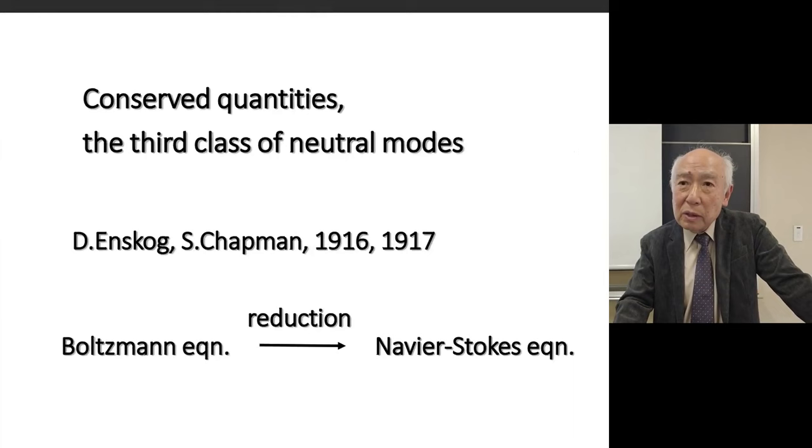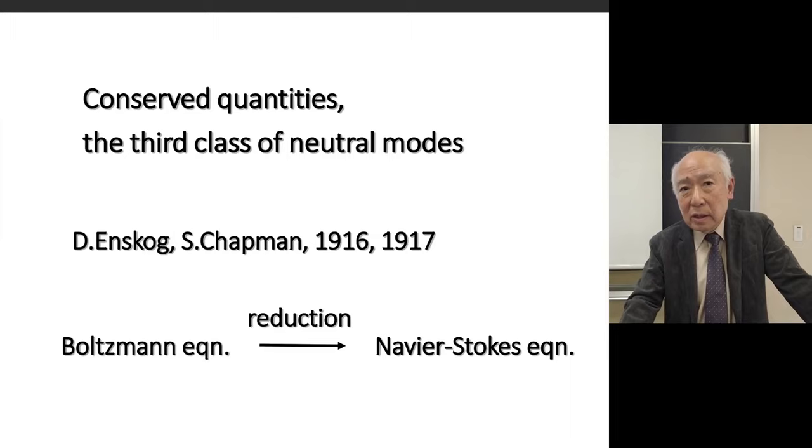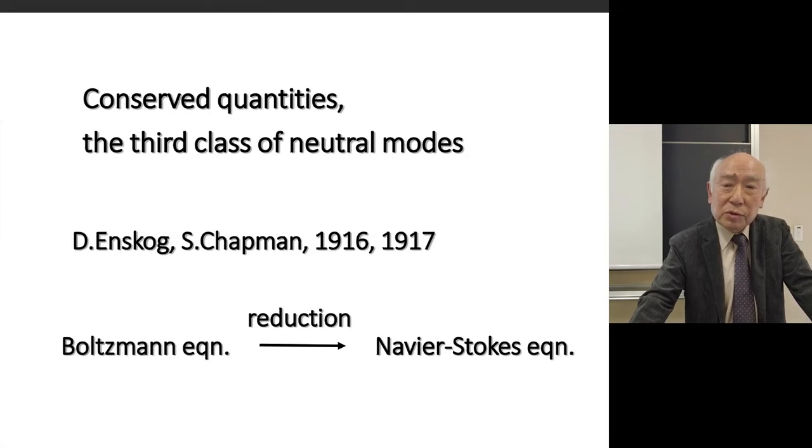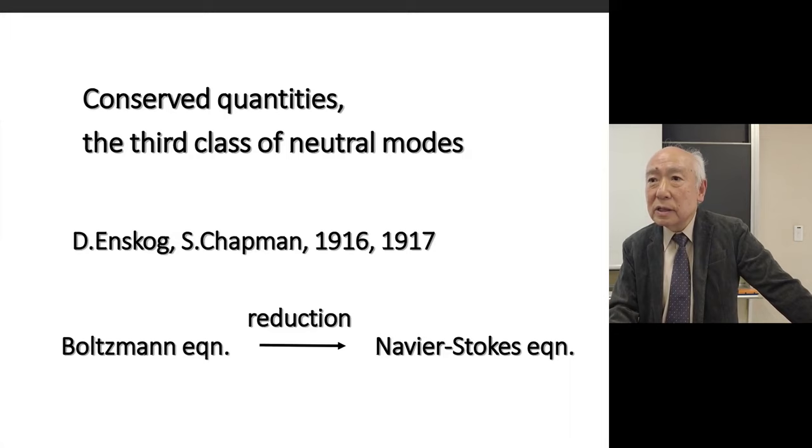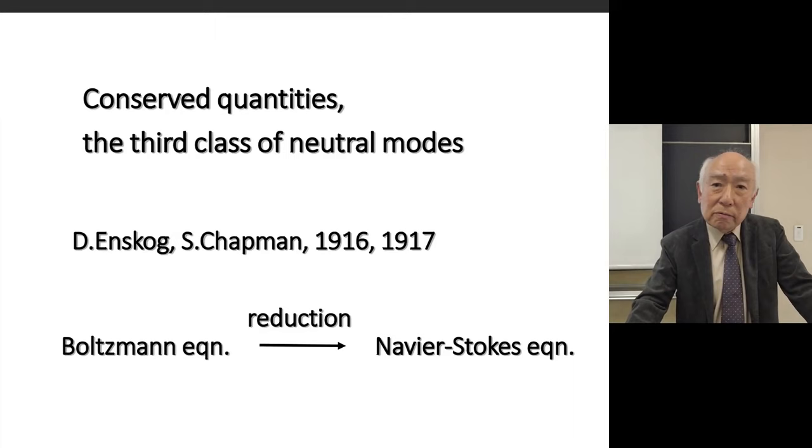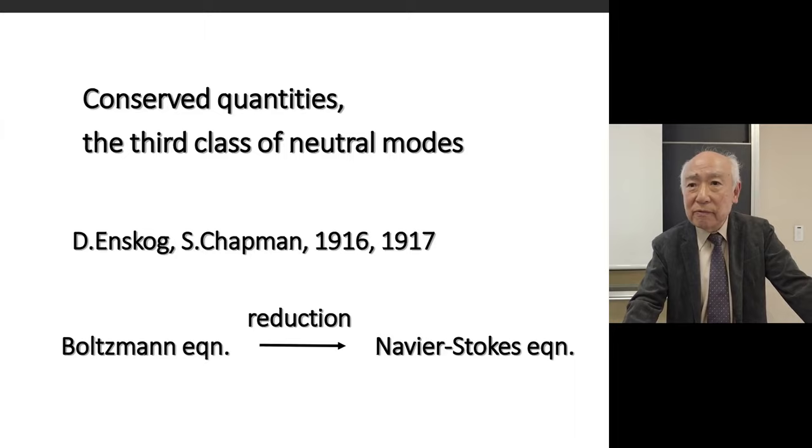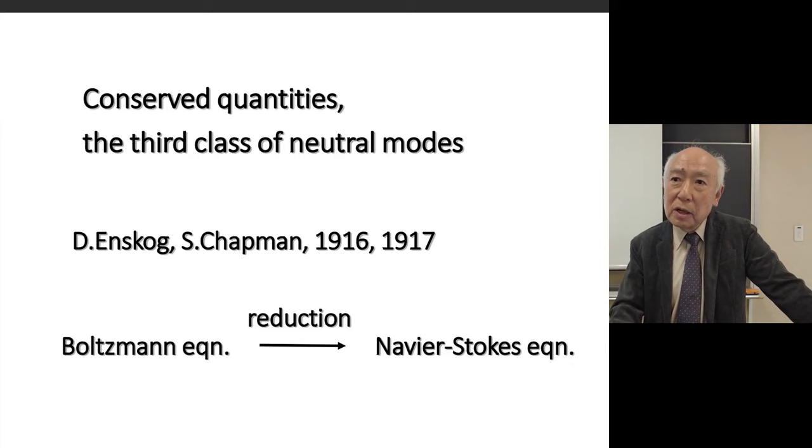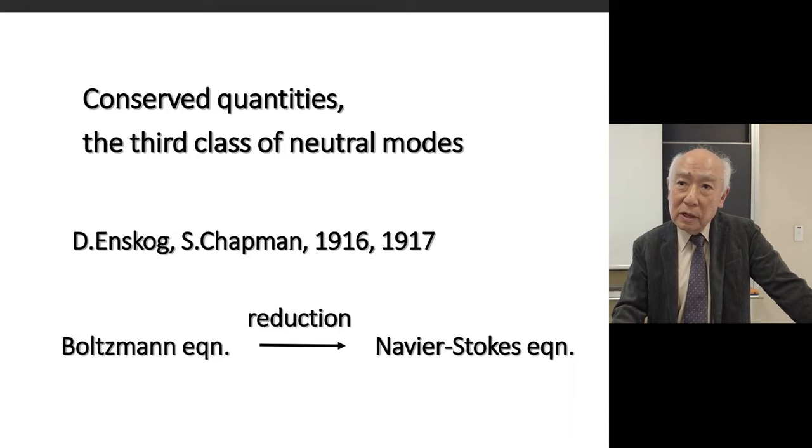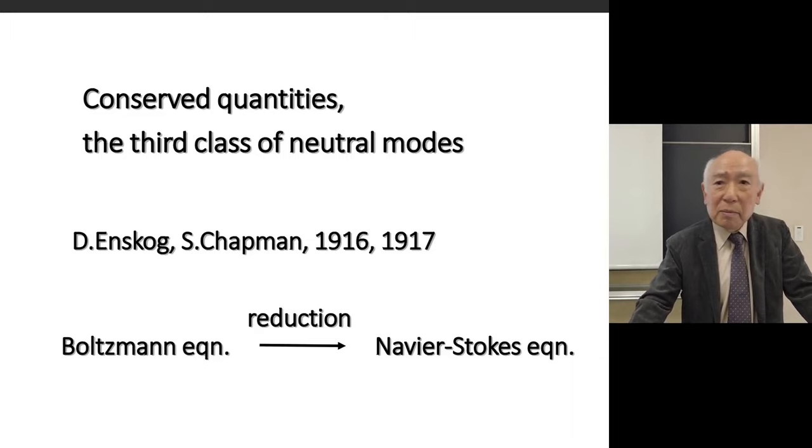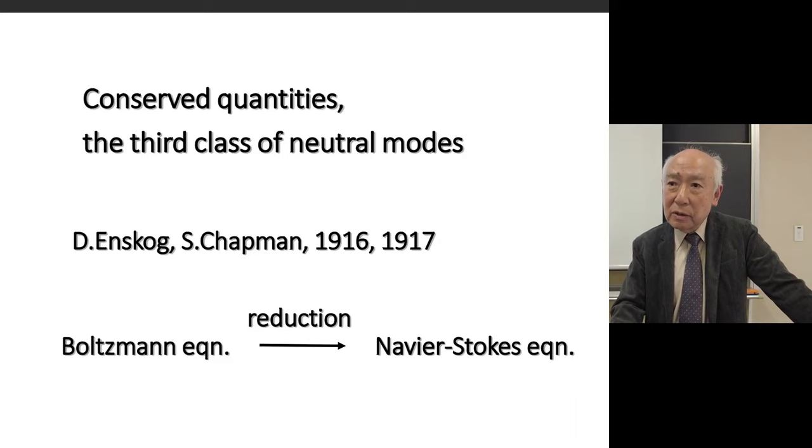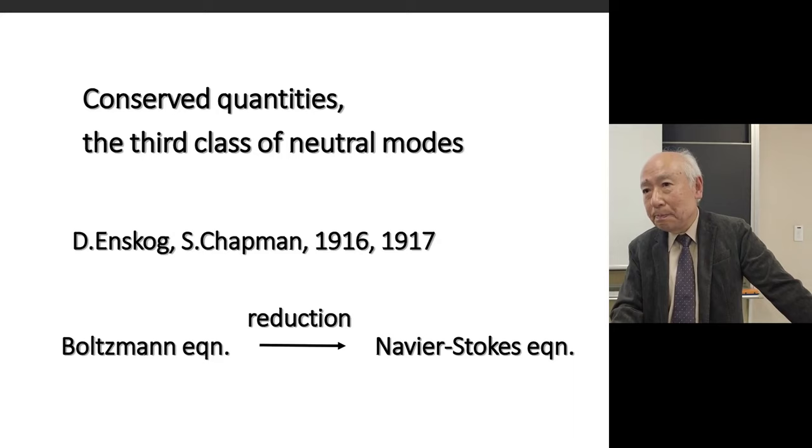Well, it may be questioned whether or not universal classes of neutral modes are limited to these two classes. Actually, there is a third class, which is conserved quantities. Conserved quantities are neutrally stable, simply because an arbitrary change of their values is conserved, similarly to phase. We know the classical reduction theory of Enskog and Chapman, very old theory, which takes advantage of this nature of conserved quantities for deriving the Navier-Stokes equation from the Boltzmann gas kinetic equation, by means of a method quite similar to the systematic theory of phase reduction.